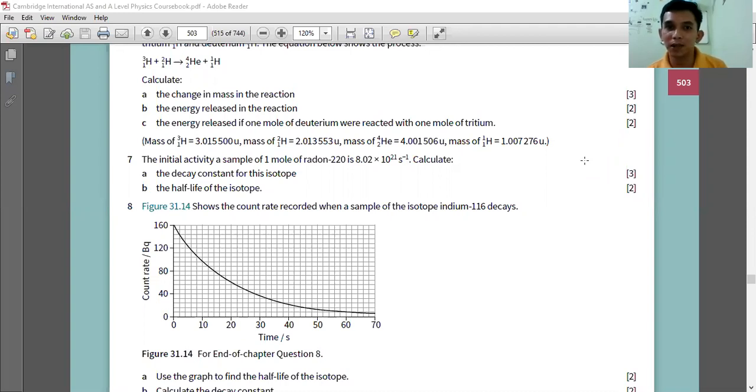But let's get your spirit back to do these questions. We continue to do number seven. The initial activity of a sample of one mole of radium-220 is 8.02 times 10 to the power of 21 per second.